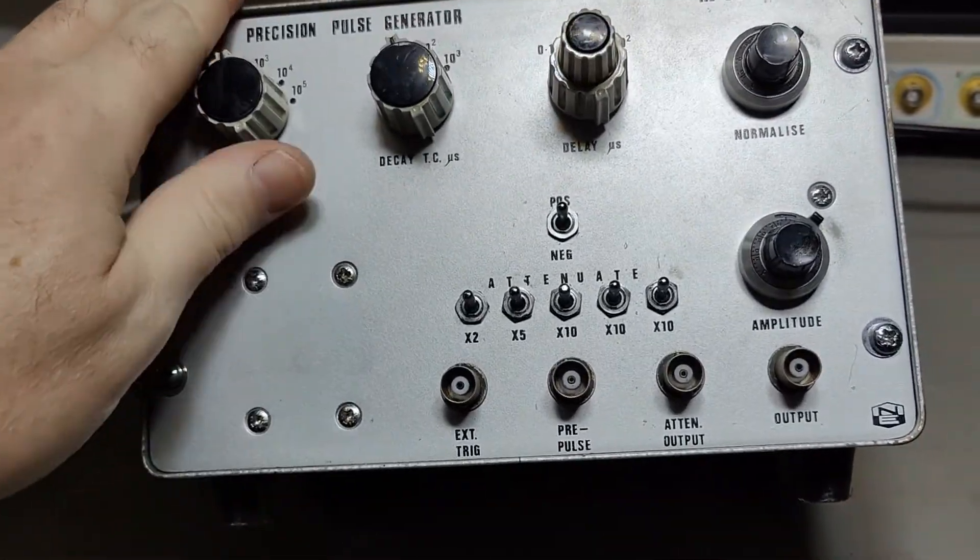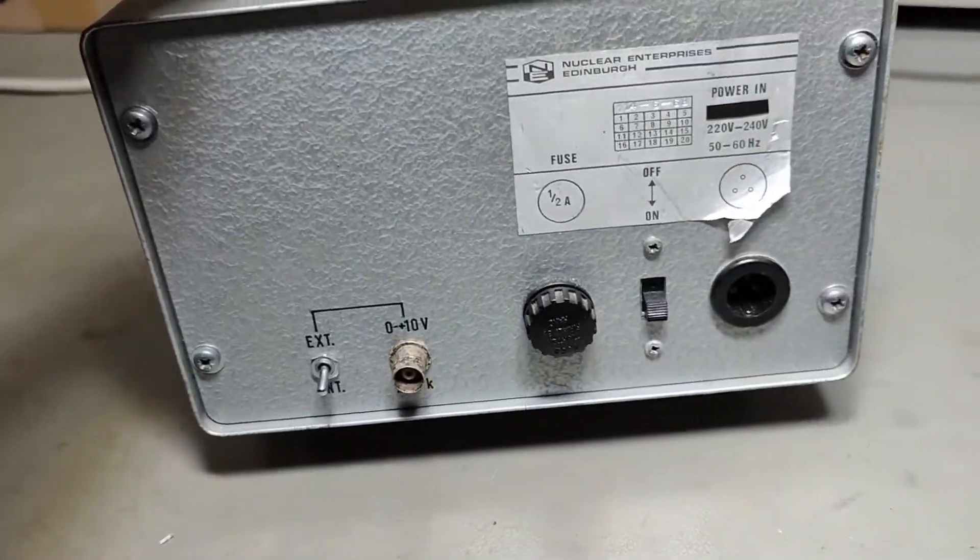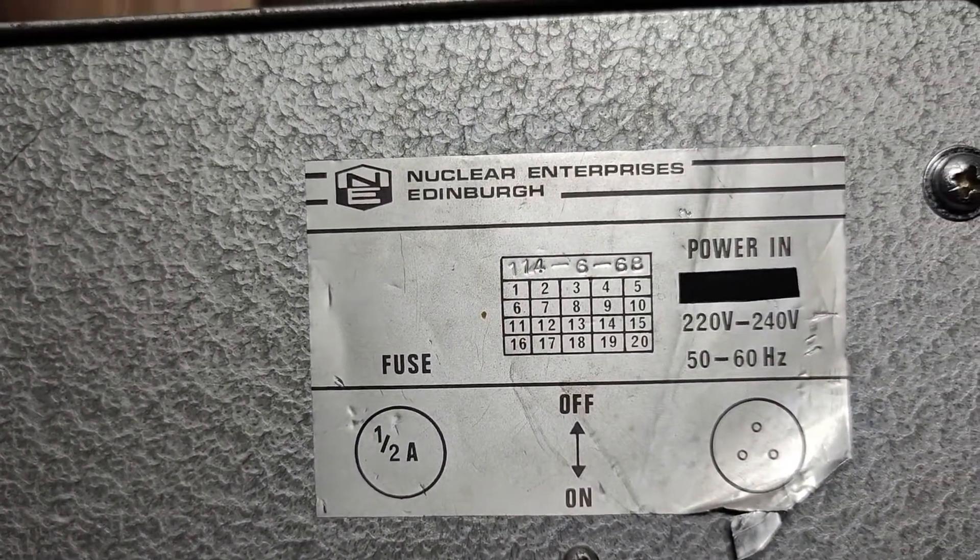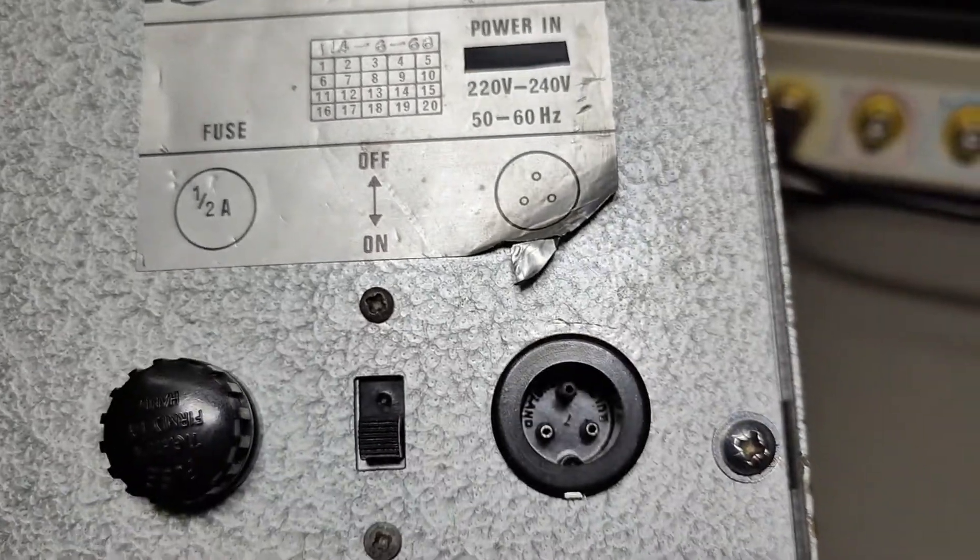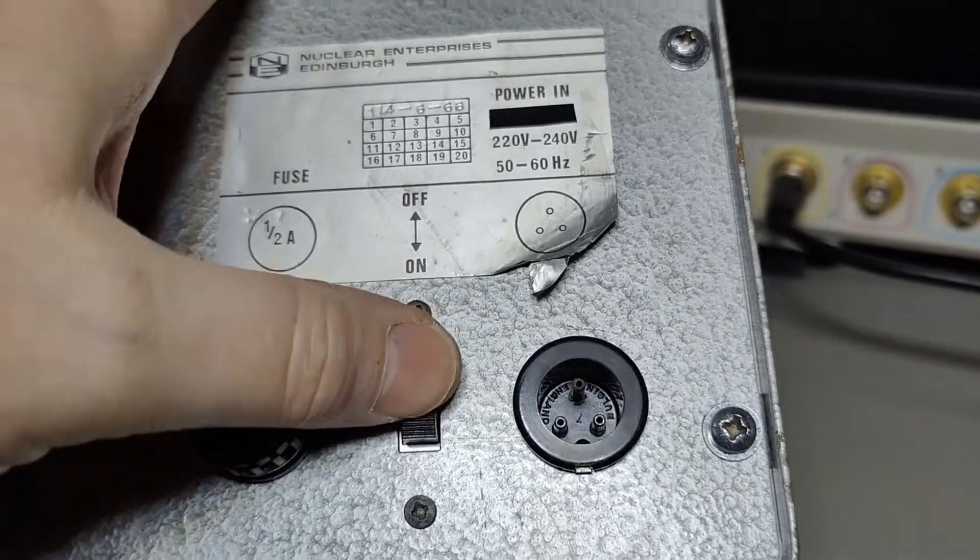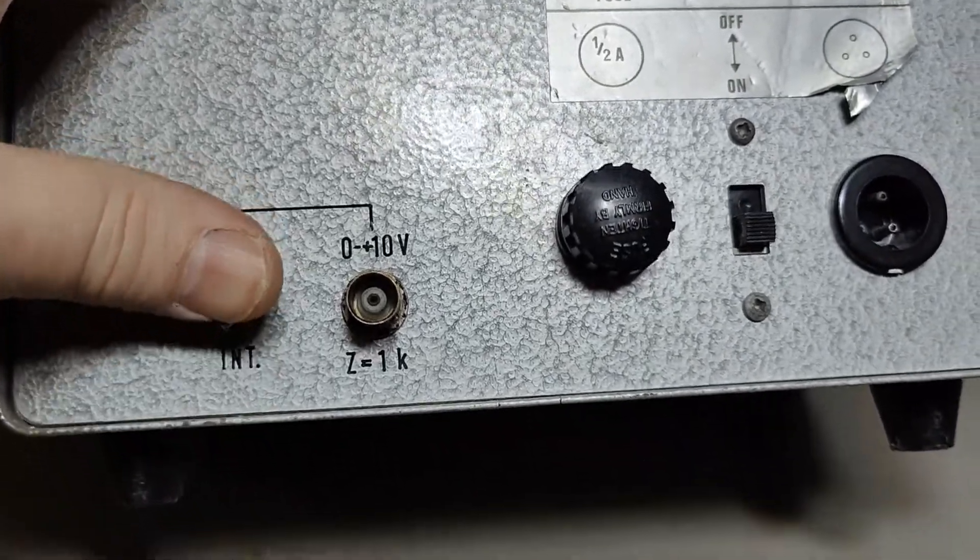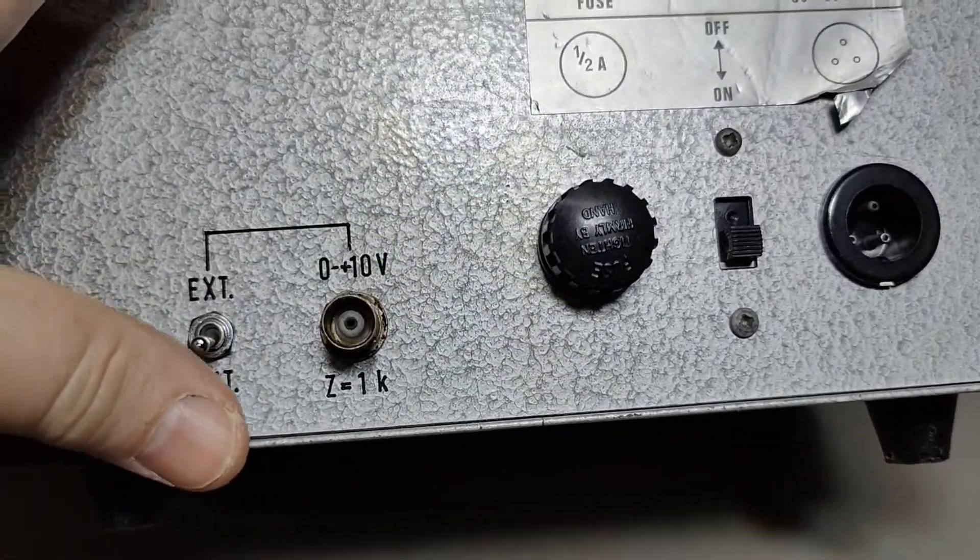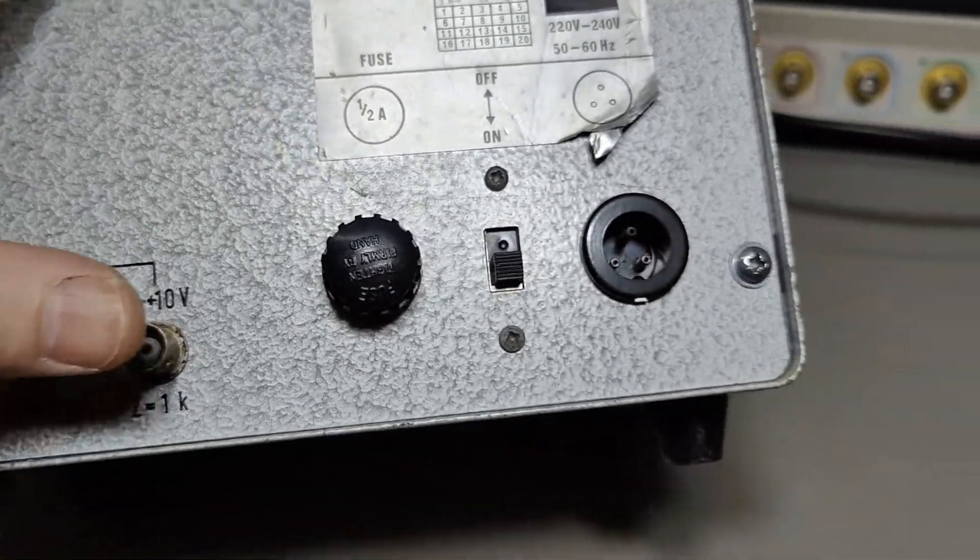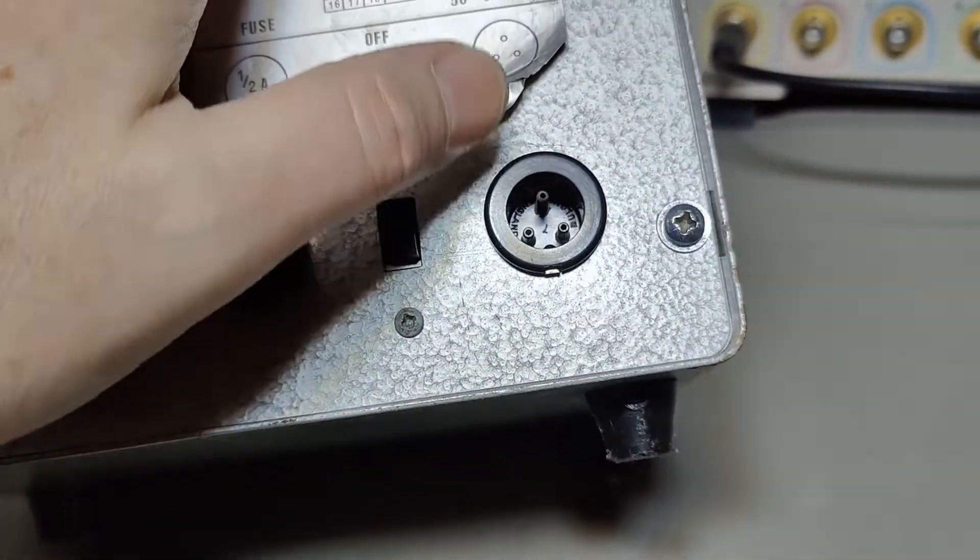First I need to open it and have a look, do a little pre-inspection before we power it up. At the back here we can see the Nuclear Enterprises label. This is the on-off switch and a fuse, and that will be external-internal, some stuff here zero to 10 volts. I'll go for internal.